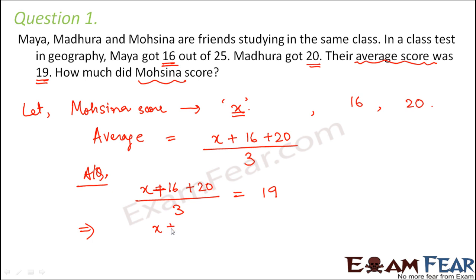So how do we solve this? X plus 20 plus 16 is 36 divided by 3 is equal to 19. Now let's move 3 to the right hand side. So we get X plus 36 is equal to 19 into 3. So 19 into 3 is 57. So X plus 36 is equal to 57. Or we can say X is equal to 57 minus 36, which is equal to 21.